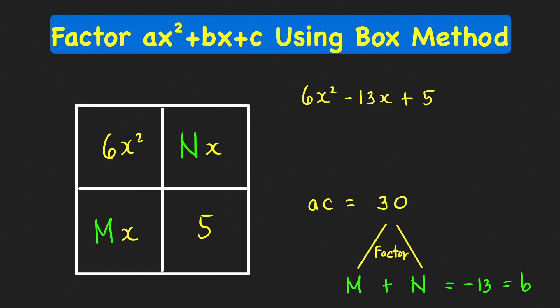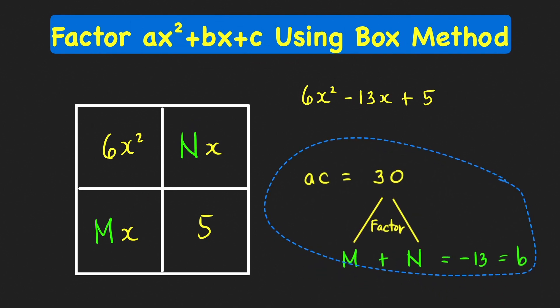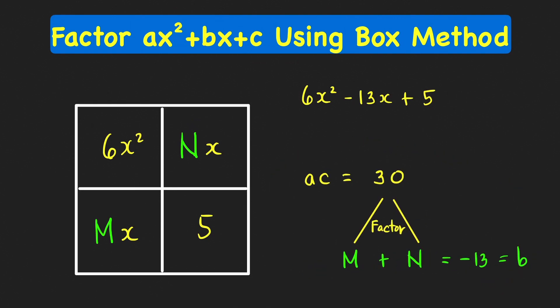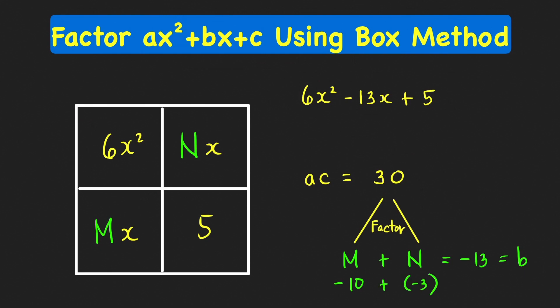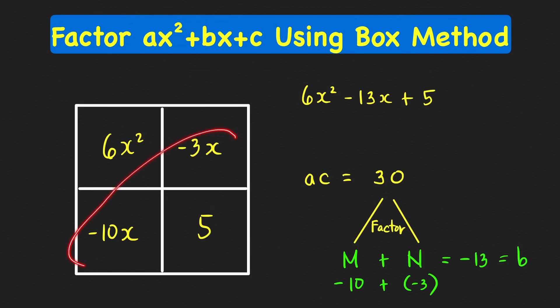What are the factors of 30 whose sum is negative 13? Since the sum is negative and the product is positive, the two numbers must both be negative. They are negative 10 and negative 3: their sum is negative 13 and their product is 30. So m is equal to negative 10 and n is equal to negative 3. The order of these two is not important.